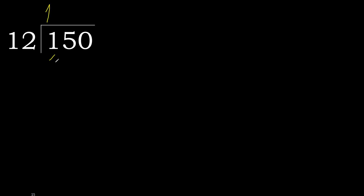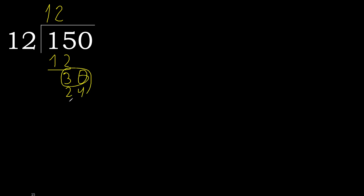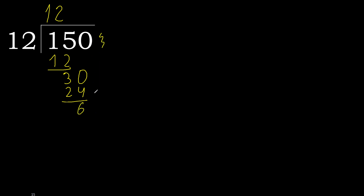12 is not greater, subtract. Bring down next digit: 30. 12 multiplied by 3 is greater, multiply by 2 is 24. 24 is not greater, subtract. No number remains.